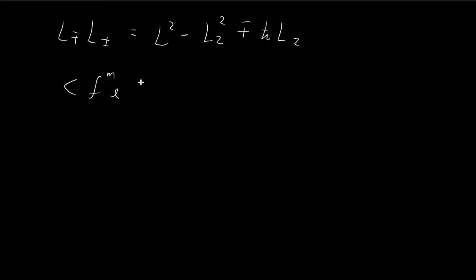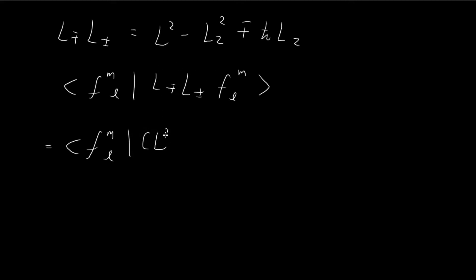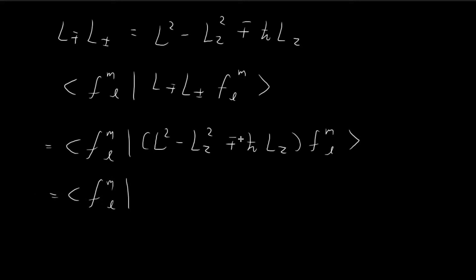To finish our proof, we start with the inner product expression and replace the operator L∓L± with the equivalent expression L² − Lz² ∓ ℏLz. So we substitute this operator, giving ⟨F_ml | (L² − Lz² ∓ ℏLz) | F_ml⟩.